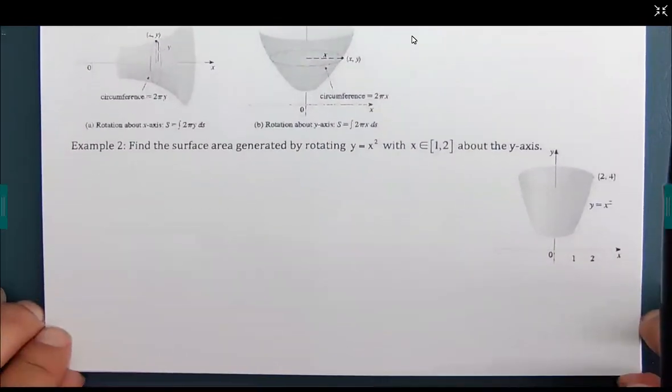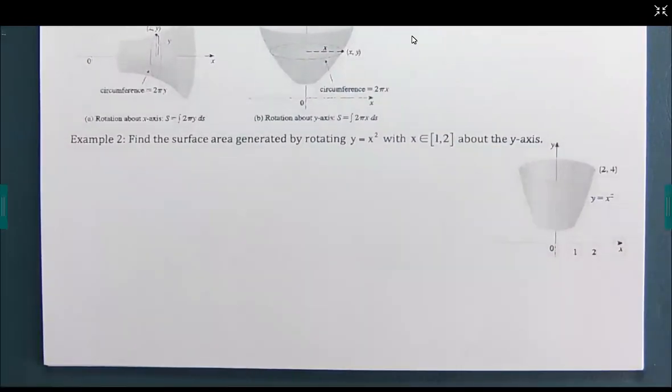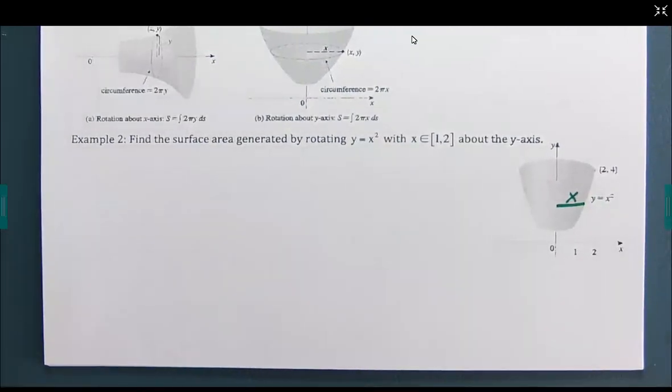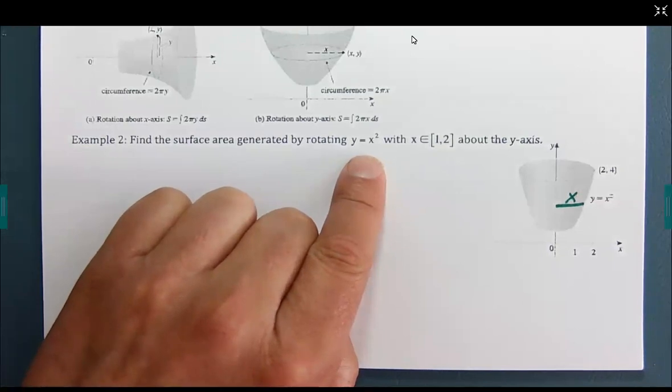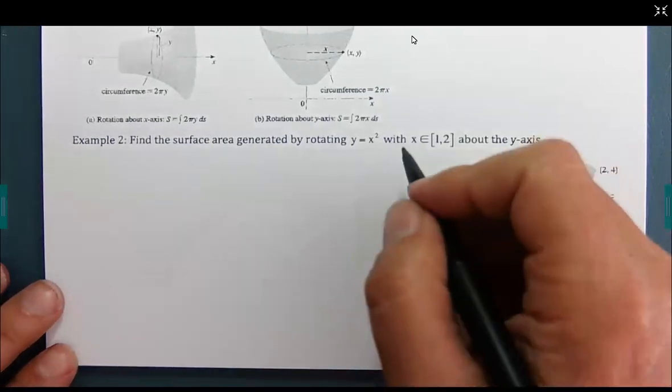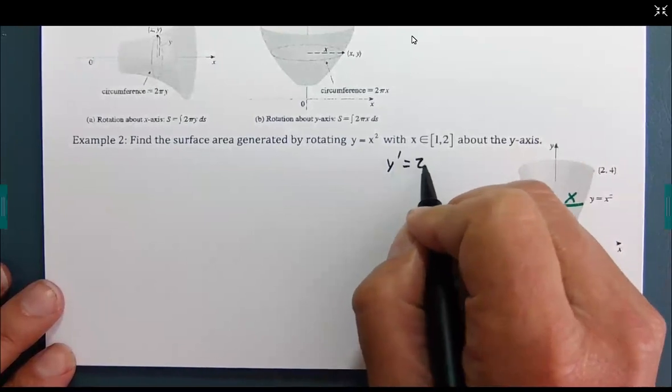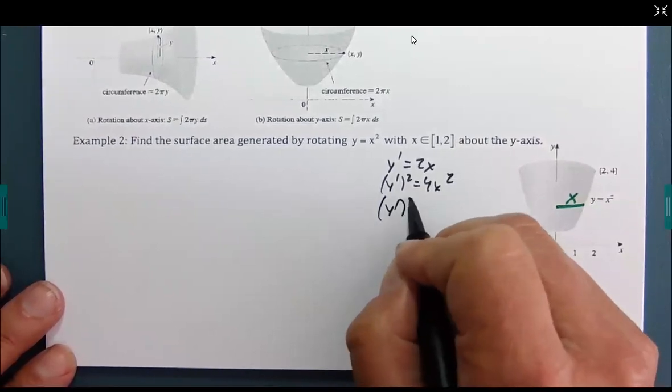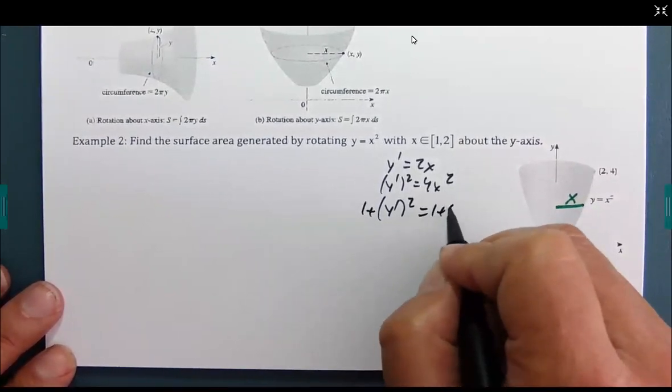This time, we are going to generate a surface area based on y equals x² based on the y-axis. Now, what that means is our radius, as it were, is x. And you'll note our function is already in terms of x. So, what's going to happen? Let's get the y prime, 2x, y prime squared, 4x², 1 plus y prime squared, 1 plus 4x².